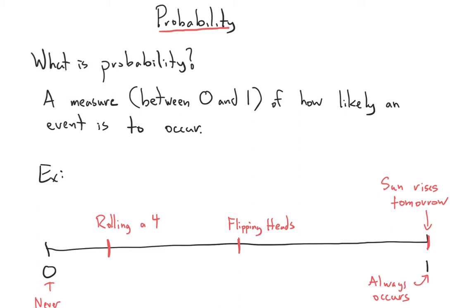And anything in between, we give it a number. If it's closer to zero, it's less likely. And if it's closer to one, it's more likely.